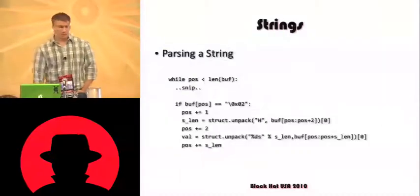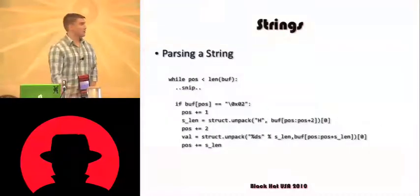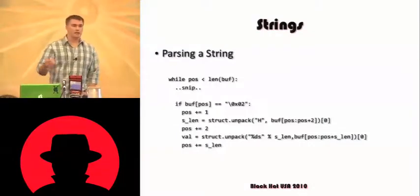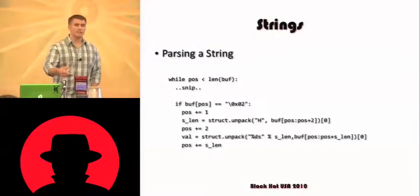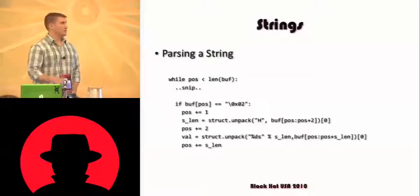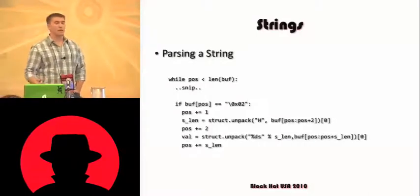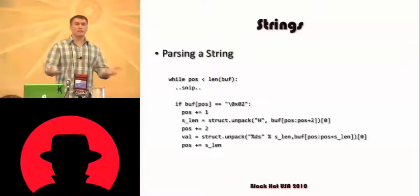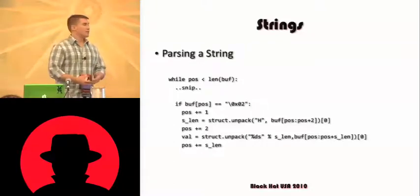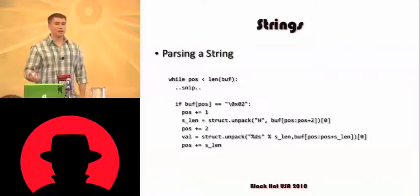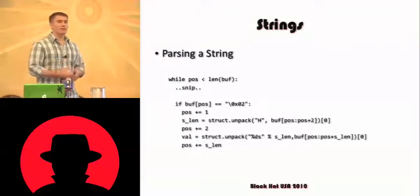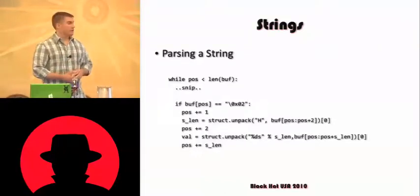Our type markers are basically shorts, or unsigned 16-byte integers. When parsing a string, when we indicate that our current position is at a type marker, we unpack the next value into a short to get the length of the string, then unpack the string based on that length to get the actual string value.